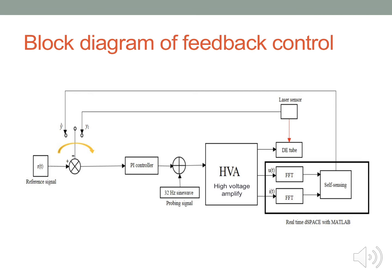Here is the block diagram of feedback control. First, I need to use the FFT to calculate the value of current and voltage. Then, I got the value of the reactance and displacement. I use the polynomial function to fit the relationship between the reactance and displacement of the DE tube. So, I can get the self-sensing model.